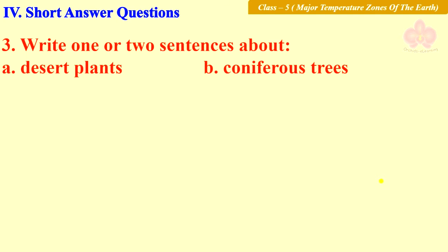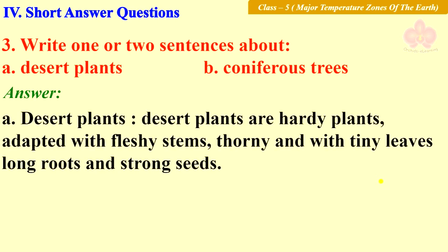Write one or two sentences about: first, desert plants, and second, coniferous trees. Desert plants are hardy plants adapted with fleshy stems, thorny and with tiny leaves, long roots, and strong seeds.